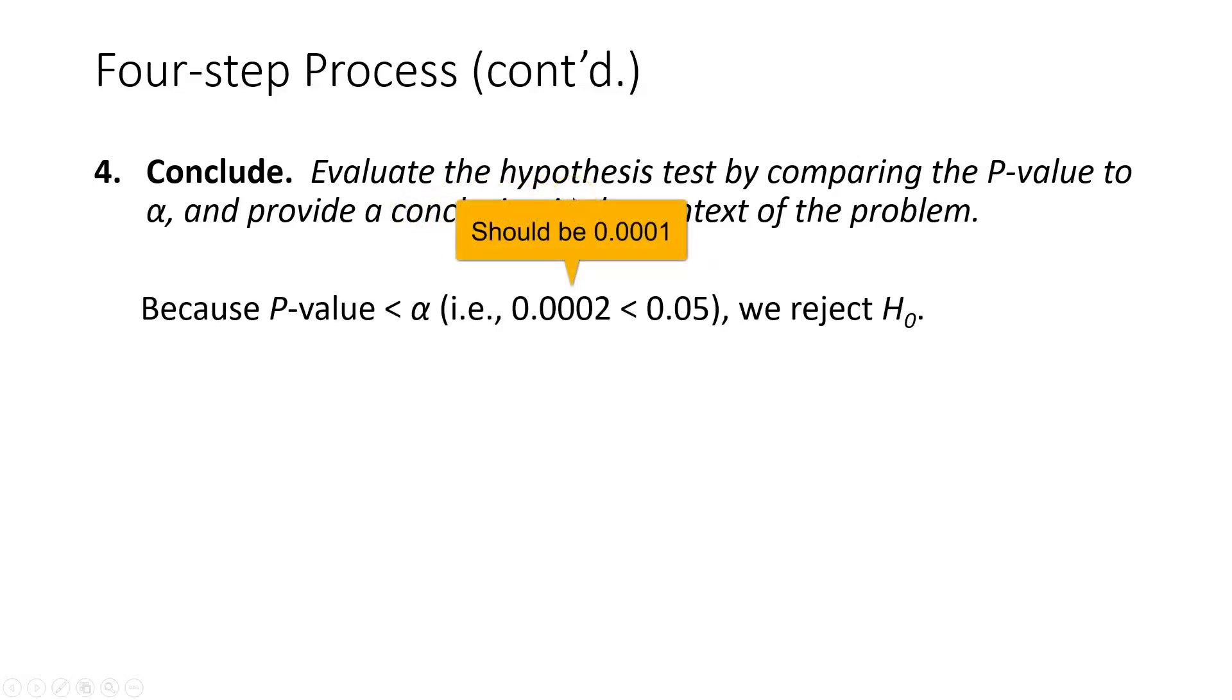The first thing we need to do is evaluate the hypothesis test. Remember what we are evaluating is the null hypothesis. We're either going to reject the null hypothesis or fail to reject it. In this case, because our P-value is less than the level of significance—in other words, 0.0002 is much smaller than 0.05—we reject the null hypothesis.